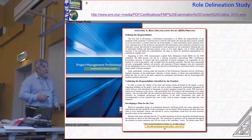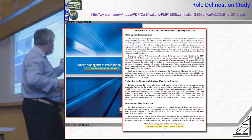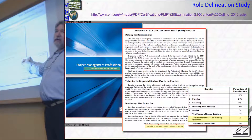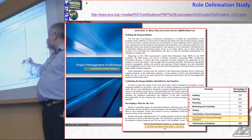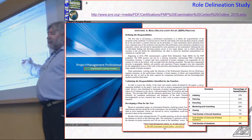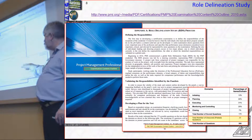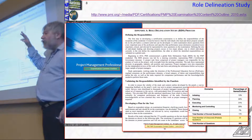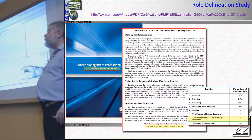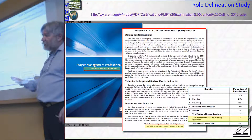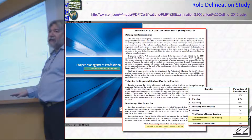What the exam content outline tells us is that the exam is based on something called domains. That's very unfortunate because it's a piece of terminology we don't need. You can forget it now I've said it, except that the domains are called Initiating, Planning, Executing, Monitoring, and Closing. Those are the column headings on page 25. These are domains, and on page 25 they're process groups. They're not the same thing, even though they're named identically.